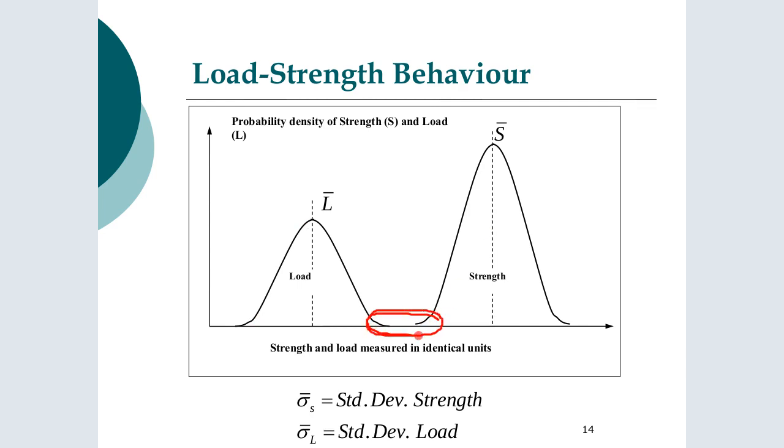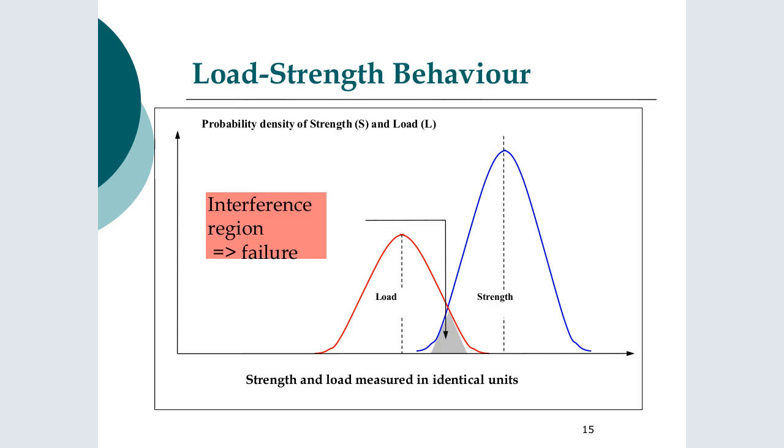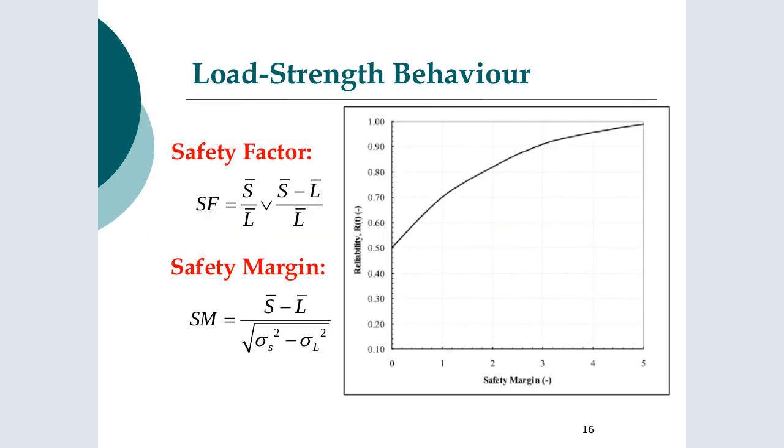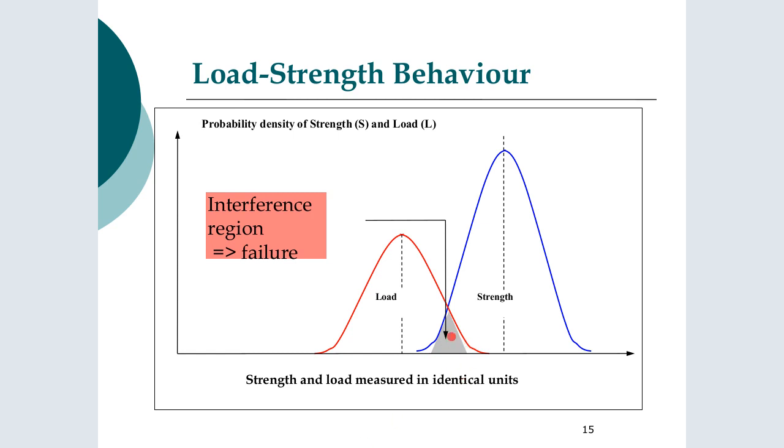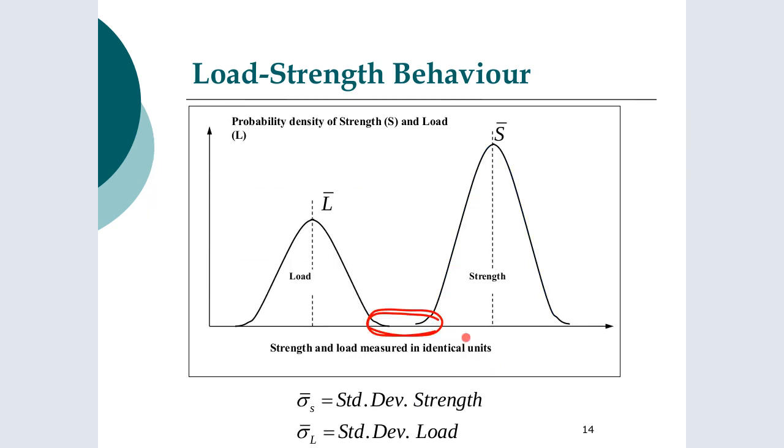We'll have distribution associated with the load and also with the strength. Essentially, what we want to do is to avoid overlap. Because if we get overlap, there's the possibility of failure occurring. If we get any interference region here, this is where we expect failure to occur. Obviously, if the two of them overlap, you'd expect a high level of failure. But we give yourself a bit of distance. There's two parameters that we use, safety factor and safety margins. If we take the safety margin here, for example, we see that as it has increased, the reliability increases, approaches one. But this comes at a cost because you've a lot of material present that is by and large redundant.